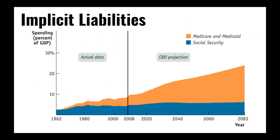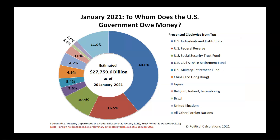Visually, you can see that implicit liabilities are projected to increase as a percentage of GDP well into the future. Therefore, it is a concern that while we might be able to handle our current debt level, in the future it's going to get even more difficult to manage. We'll talk more about the implications of government debt in class and work on some more problem sets. See you then.